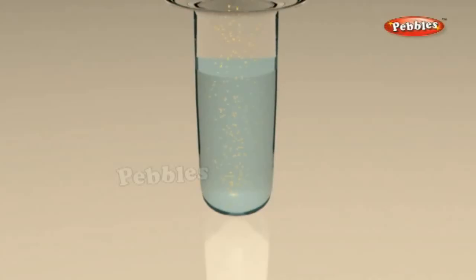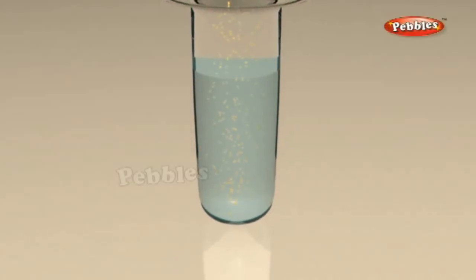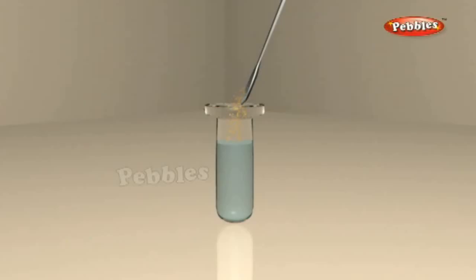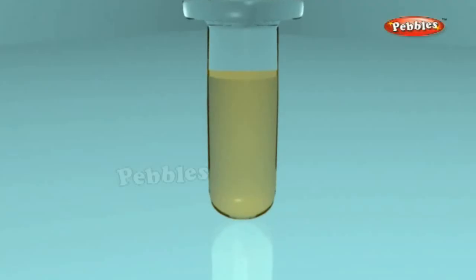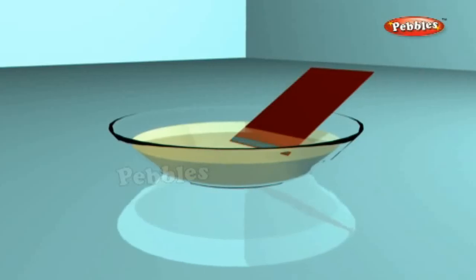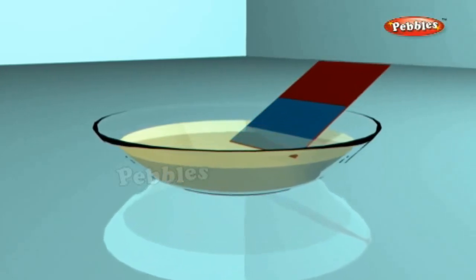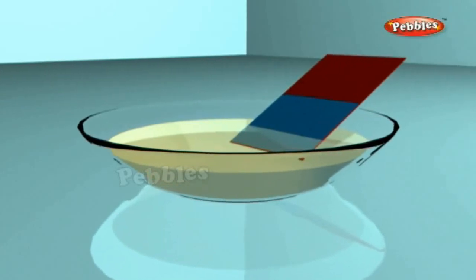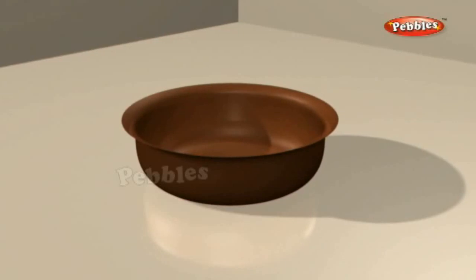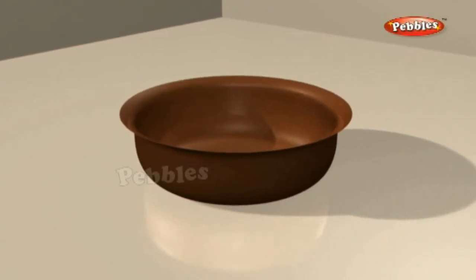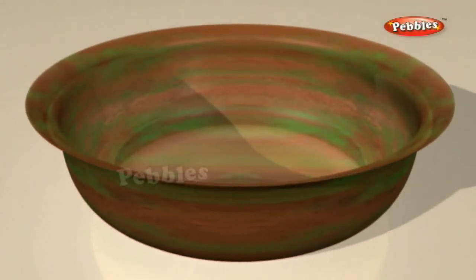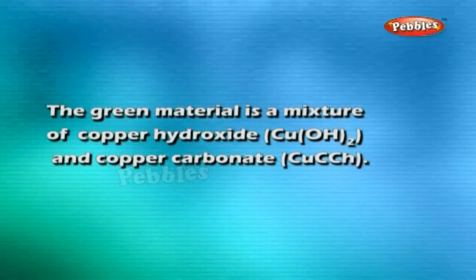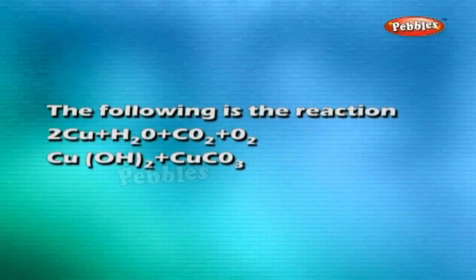Take a small amount of powdered sulphur in a deflagrating spoon and heat it. Wrap a metallic wire around it and give it the shape as shown in the figure. As soon as sulphur starts burning, cover the tumbler with a lid to ensure the gas produced does not escape. Add a little water, shake the tumbler well, and check the solution with red and blue litmus papers. Sulphur dioxide gas is produced; when dissolved in water, sulphurous acid is formed: SO₂ + H₂O → H₂SO₃. Generally, oxides of non-metals are acidic in nature.